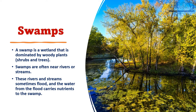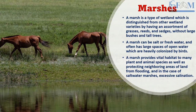The first type is swamps. A swamp is a wetland dominated by woody plants like shrubs and trees — for example, willow or poplar. Swamps are often near rivers or streams, and these rivers and streams sometimes flood nutrients into the swamps, carrying nutrients into them.